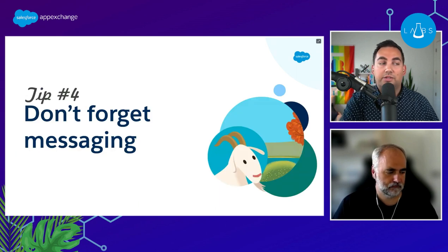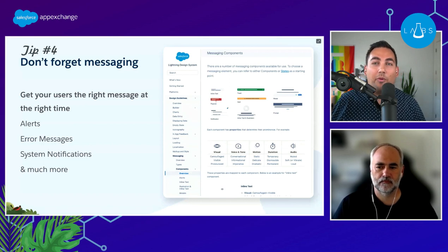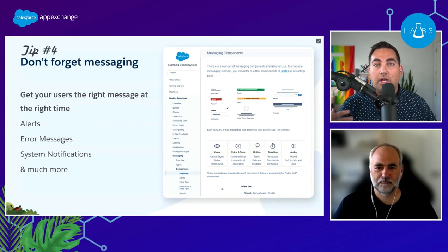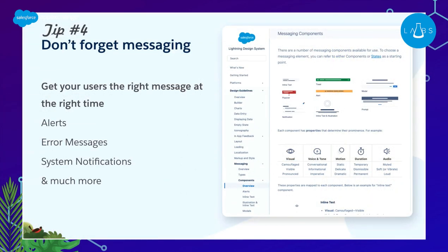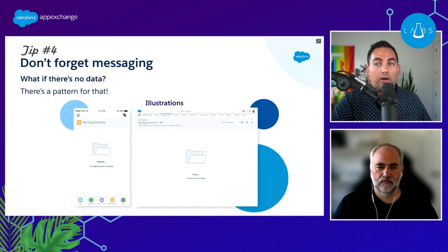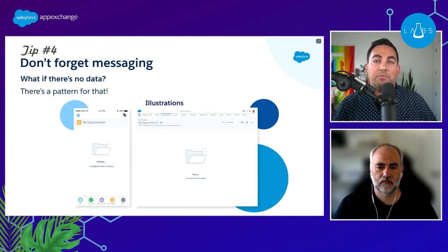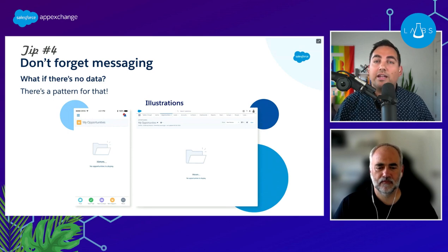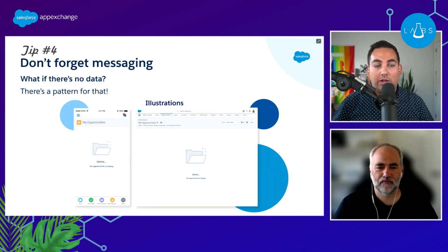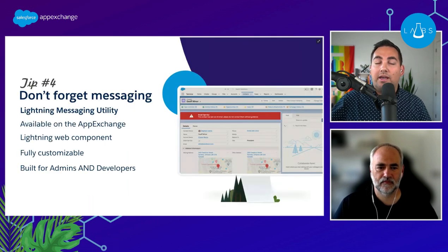Our next tip is to not forget messaging — not sending a DM, but displaying messages to users on screen. The Lightning Design System has comprehensive guidelines for displaying alerts, prompts, and error popovers. One component often forgotten by developers is the empty state component — those illustrations you see around Salesforce when there's no data or no records available. It's important to keep these in your apps. I can't tell you the number of times I've forgotten to include them, loaded a component with no data, and had no feedback at all.